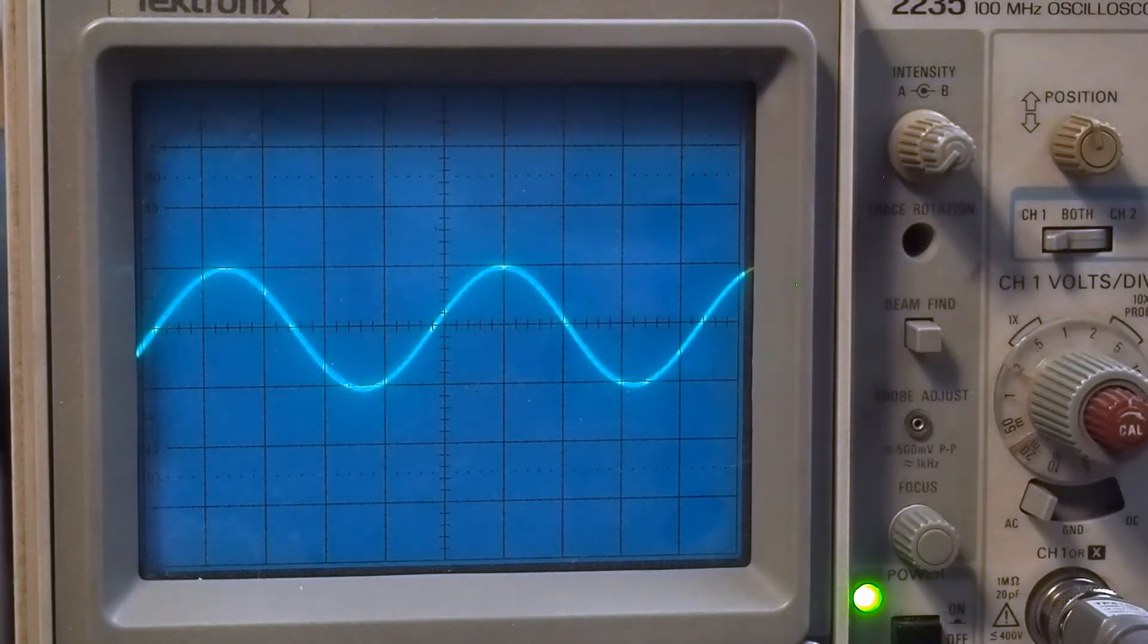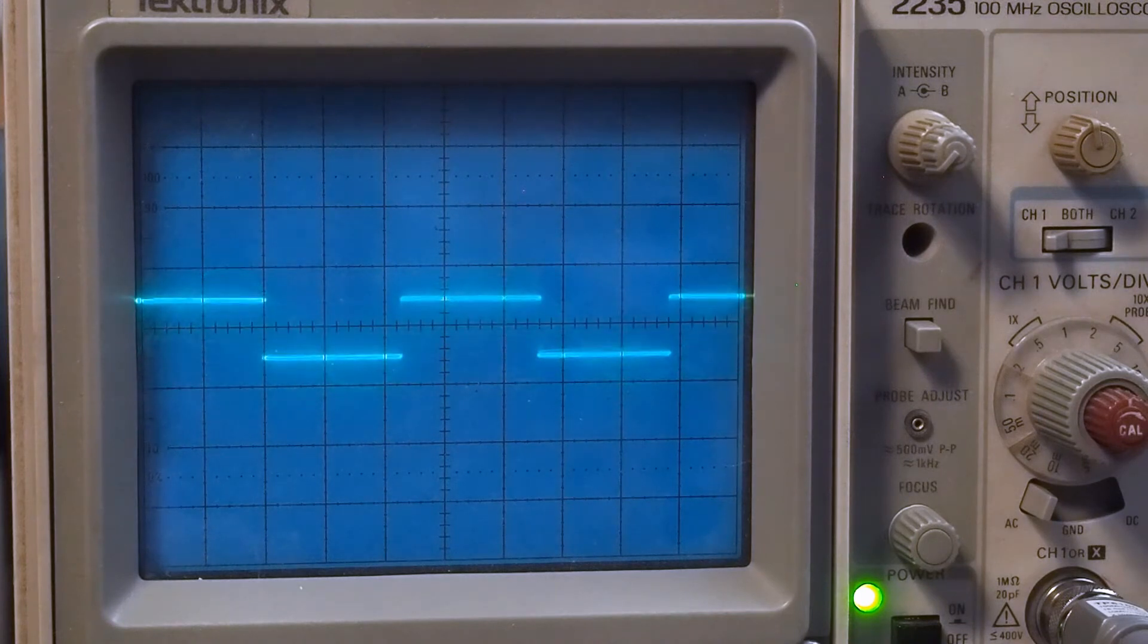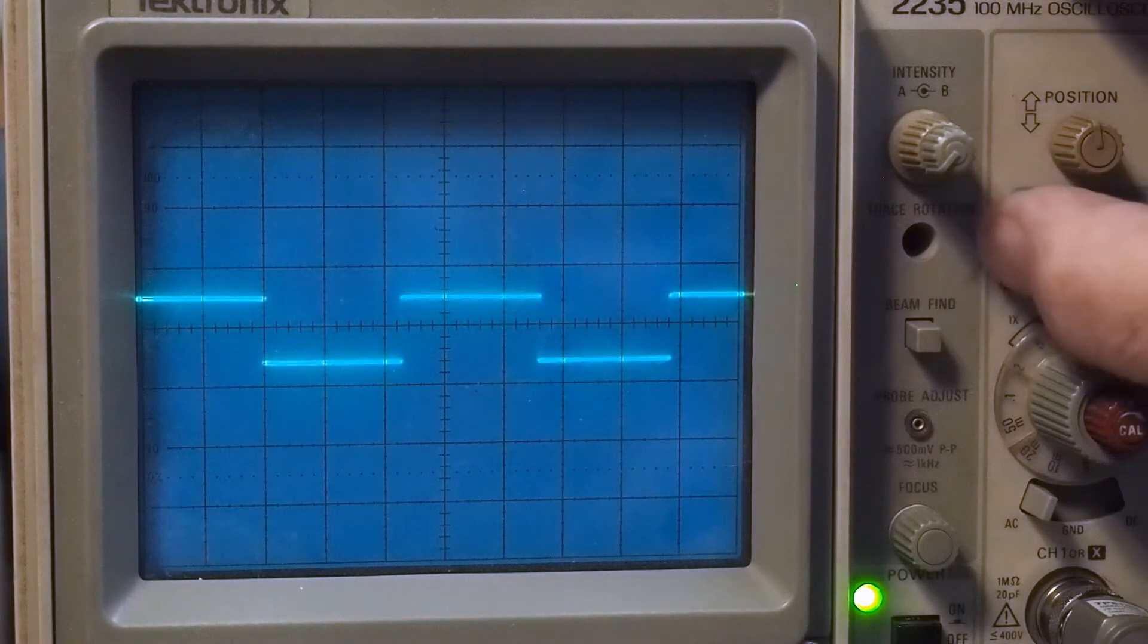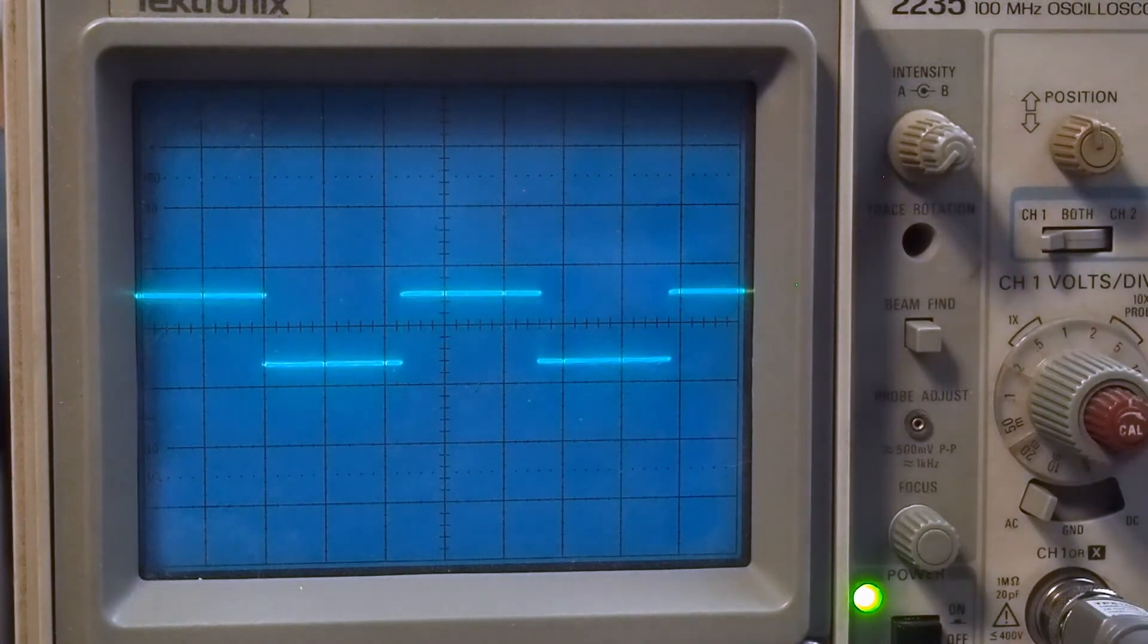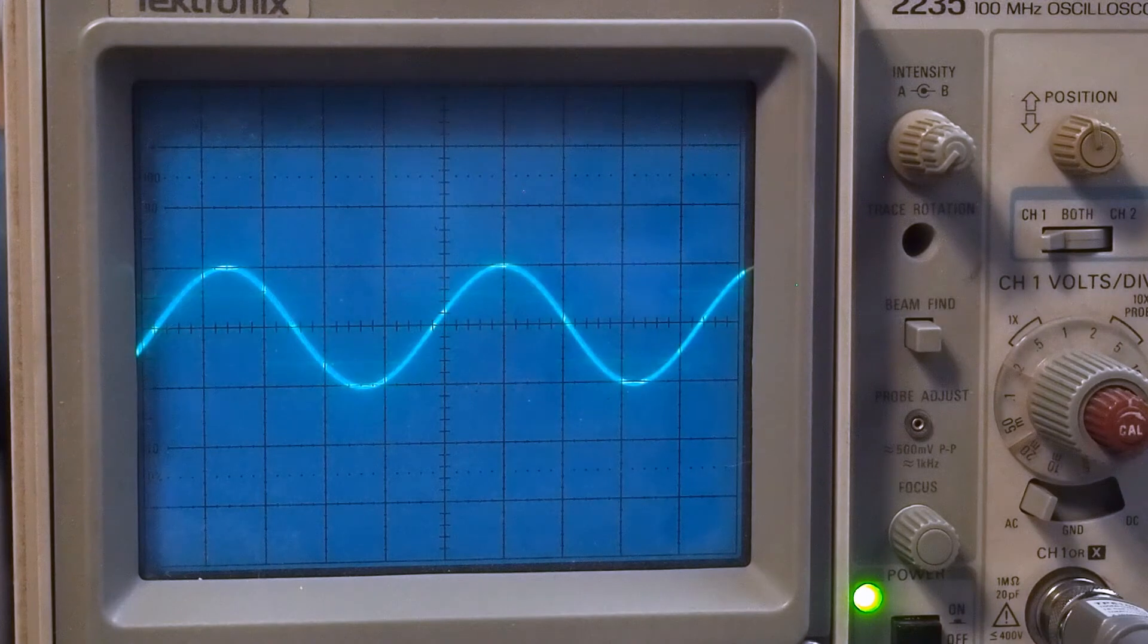Now when we look at the square waves, there's the square in, and there's the square out. And they're a little different too. So let's switch over to the other channel and see what it looks like.